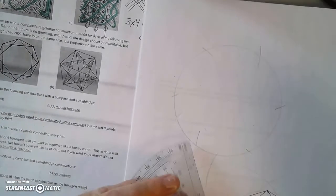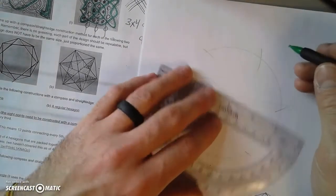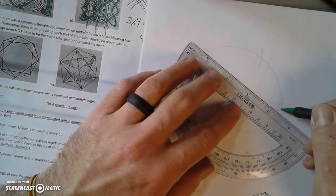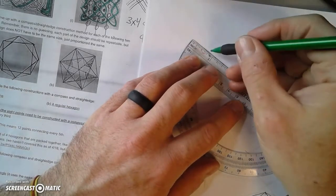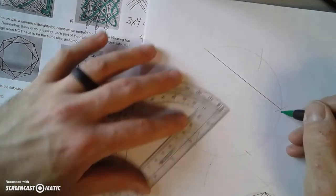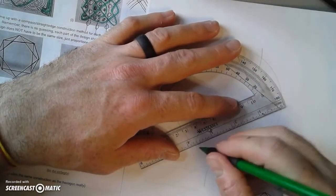So at this point, what do I have? Well, I have my hexagon. Now I don't need the hexagon, what I actually need is a star of David, a 6-2 star.